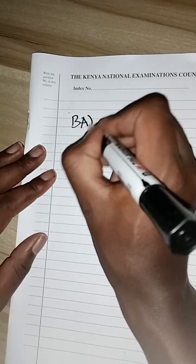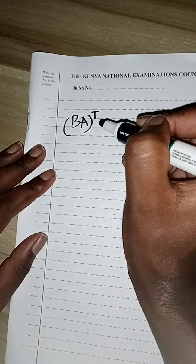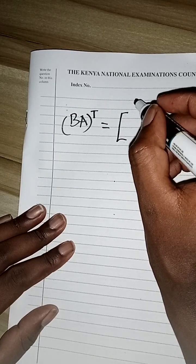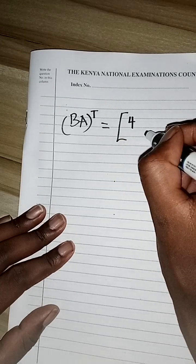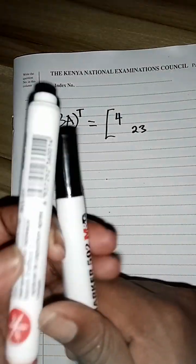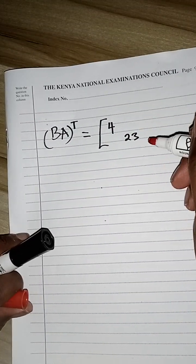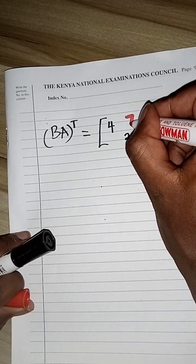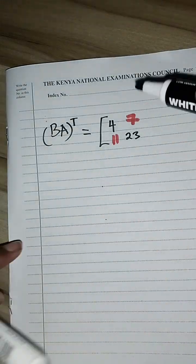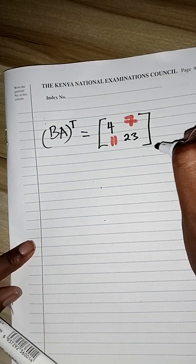Now taking the transpose of BA: the values 4 and 23 stay on the diagonal, but 7 and 11 are switched. So BA transpose is [4, 7; 11, 23].